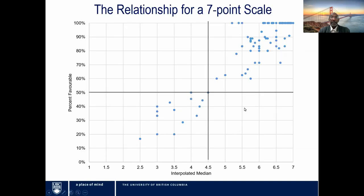This is the same scatterplot but for a seven-point scale. The methodology applies to both scales. The difference is that on the x-axis, the pivot point has shifted to 4.5 — so the pivot point is at 4.5 and 50%, as opposed to 3.5 and 50% in the case of the five-point scale.